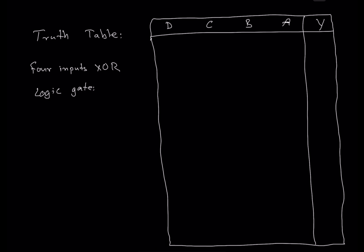Starting from the first row: if all inputs are low — A, B, C, and D are all low — the output Y will be low. If input A is high and all others are low, the output will be high because we have an odd number of high inputs. If A is low, B is high, C and D are low, output Y is high. If A is high and B is high, C and D are low, the output will be zero because we have an even number of high inputs.